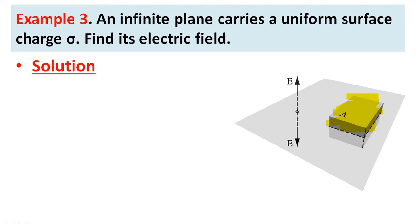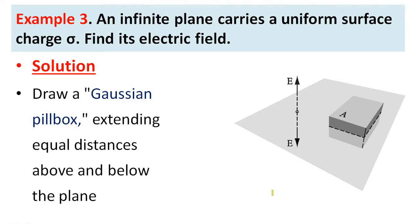This pillbox has a property: half of the pillbox is above the sheet and half of the pillbox is below the sheet. Draw a Gaussian pillbox extending equal distances above and below the plane.